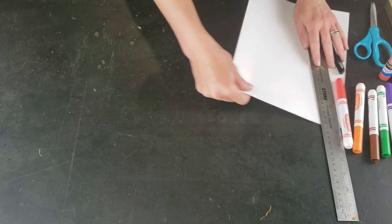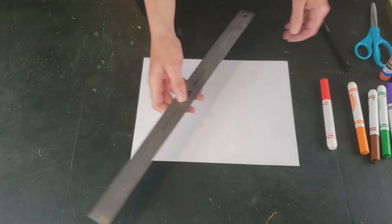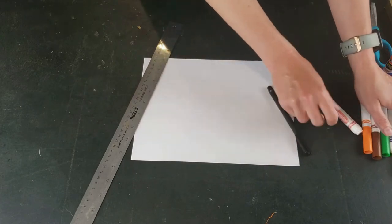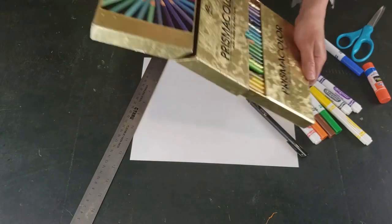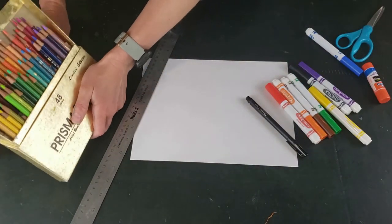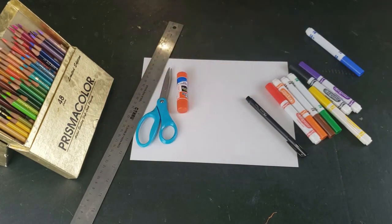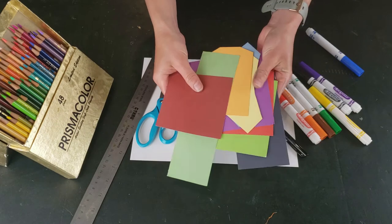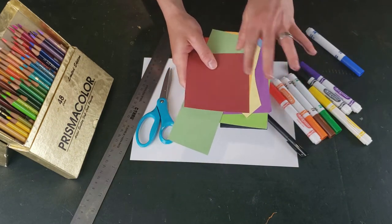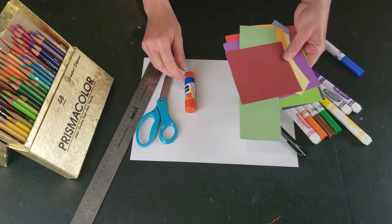For today's project you will need a piece of white cardstock or other white paper, a ruler, a black marker, some colorful markers, some colorful pencils maybe, a pair of scissors, a glue stick, and some scrap pieces of colorful paper. You can also get these colorful papers from cuttings of magazines too. That would also work.